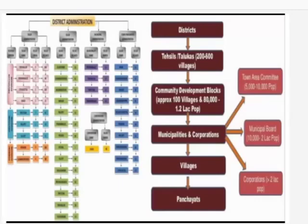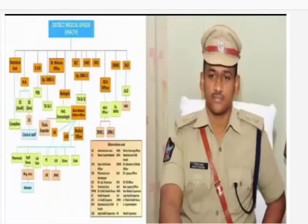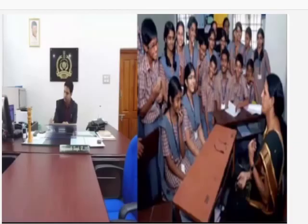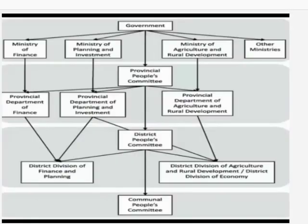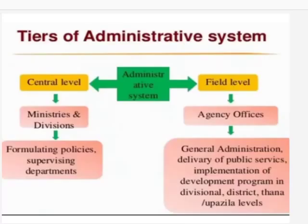There are more subordinates in district administration to assist the District Collector, like the District Medical Officer, Superintendent of Police, District Forest Officer, Chief Educational Officer, and Revenue Divisional Officer (RDO). These heads take care of their own departments and are all part of the district administration system. However, the Collector is responsible for the proper working of all departments to make sure that people are benefited by the government.